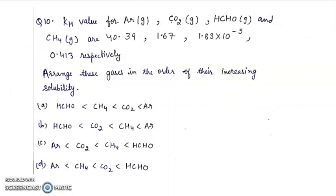Question 10: Kh value of argon gaseous, CO2 gaseous, HCHO gaseous, and methane gaseous are 40.39, 1.67, 1.83 into 10 power minus 5, 0.413 respectively. Arrange these gases in the order of their increasing solubilities.